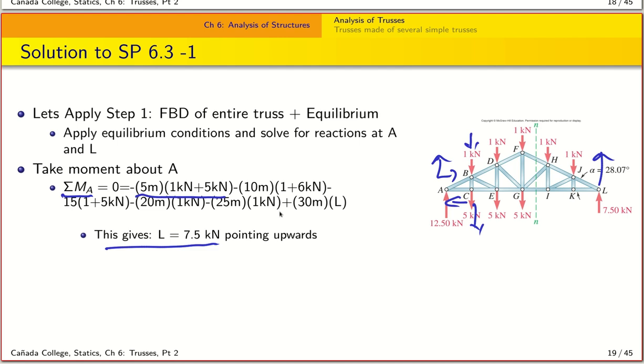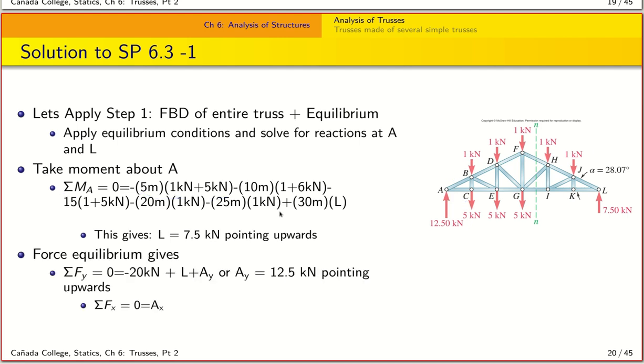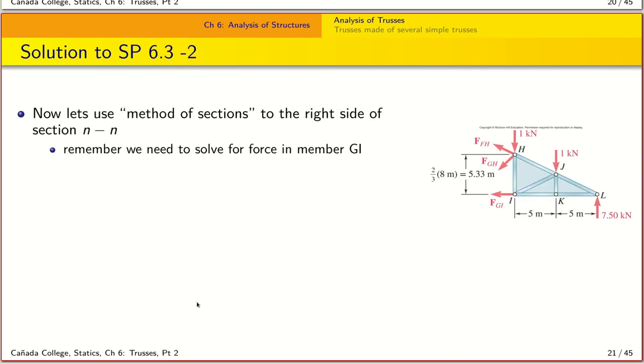To find the forces along A, I'm going to write down the equilibrium in the x and the y directions for the forces, and that very easily gives us the two remaining unknown forces: Ay which is 12.5 kilonewtons pointing upwards and Ax being zero.